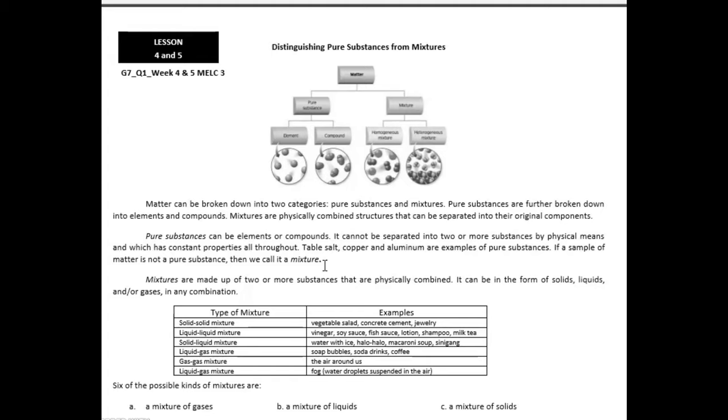Example, table salt. It's a combination of two elements, sodium and chlorine. That's why we call it sodium chloride. We also have the H2O or water. It is used for drinking, for washing, and for cleaning. If a sample of a matter is not a pure substance, then we call it a mixture.